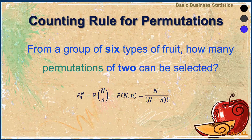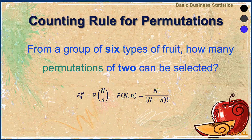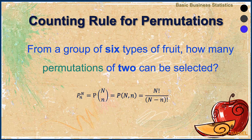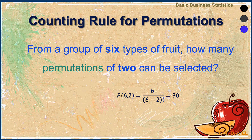Likewise, there is also a counting rule for permutations, which we could apply to our fruit example. From a group of six types of fruit, how many permutations of two can be selected? Here is the formula for permutations. The answer is six factorial divided by six-minus-two factorial, which equals 30.